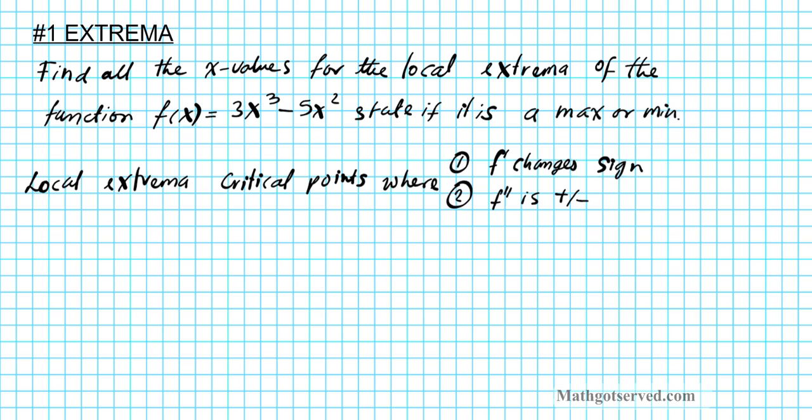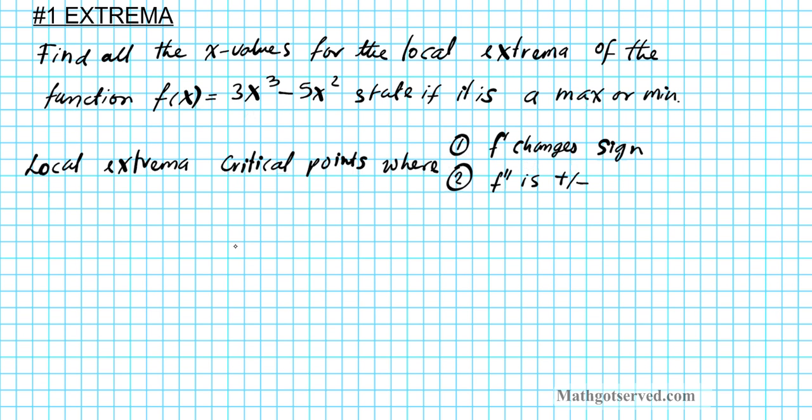So first thing we're going to do is find the critical points. These points are where certain things happen. You have a critical point where f prime is equal to zero or f prime does not exist. So let's go ahead and do that. In order to accomplish that, we want to find the derivative first.